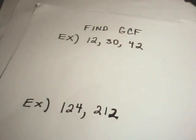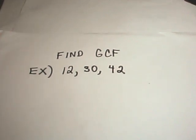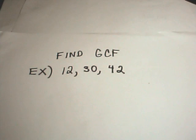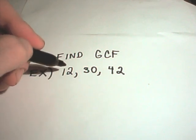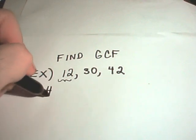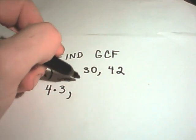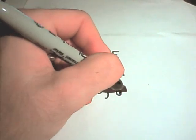So in this case, we want to find the greatest common factor of 12, 30, and 42. If your arithmetic is pretty good, you can probably figure it out quickly. But I'm going to do it the long way, because this method works on more complicated expressions as well. We're looking for a general procedure. What you want to do is factor each number. I'm going to break down 12 as 4 times 3, 30 as 3 times 10, and 42 as 6 times 7.